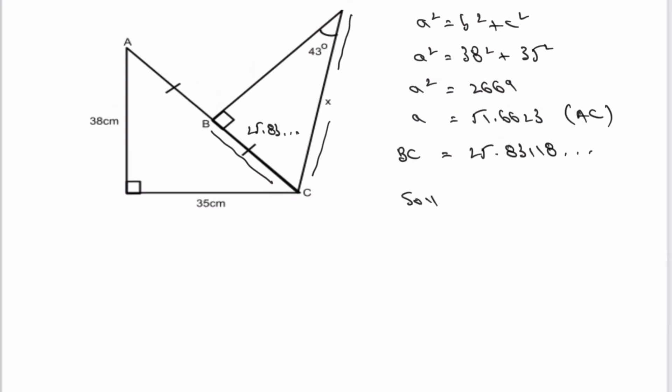If I look at SOHCAHTOA, I'm being asked to work out X. X is actually the hypotenuse of the right-angled triangle, so I've got a choice of either the sine rule or the cosine rule. But I know that BC is the opposite, so I'm going to be using the sine rule.